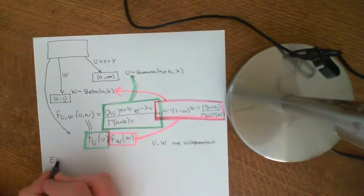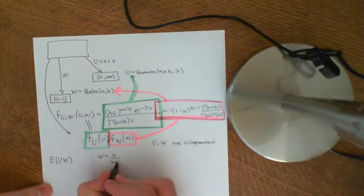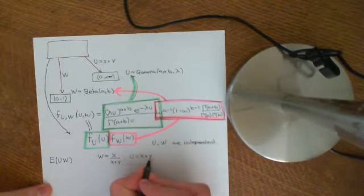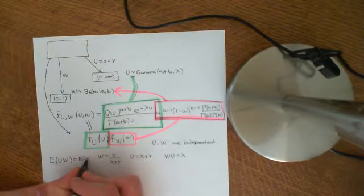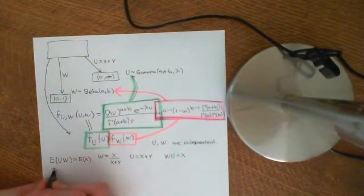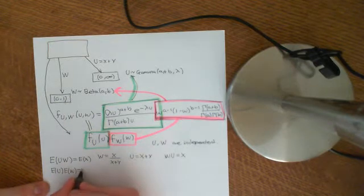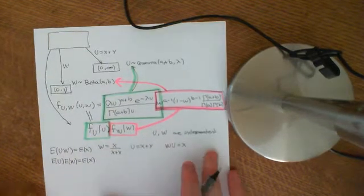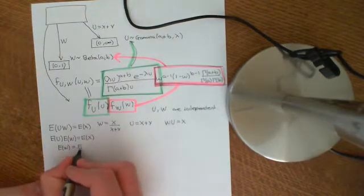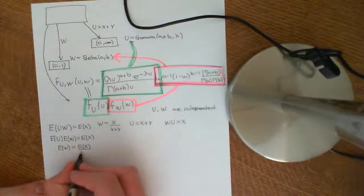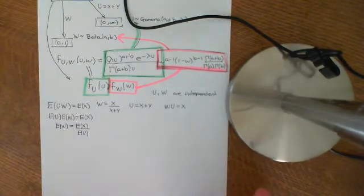So when we take the expected value of U times W — since W was defined to be X divided by X plus Y, and U was defined to be X plus Y, when we multiply them together W times U is just going to equal X — this is the expected value of X. Because they are independent, we can split up the expected value into the expected value of U times the expected value of W, equal to the expected value of X. Therefore the expected value of W is equal to the expected value of X divided by the expected value of U. Now we just need to calculate the expected values for some gamma distributions.